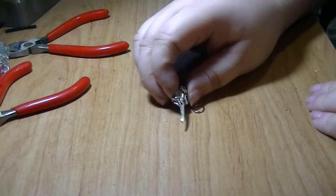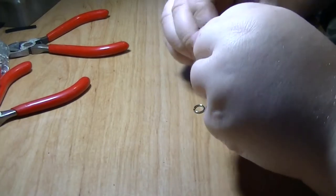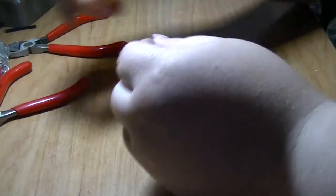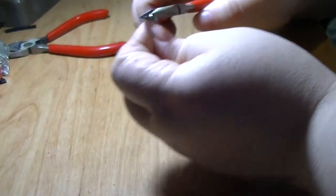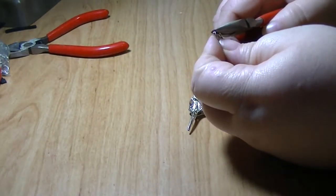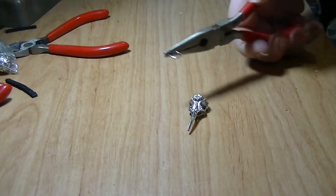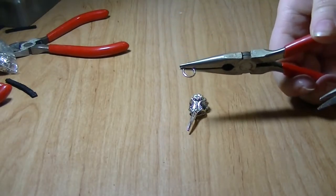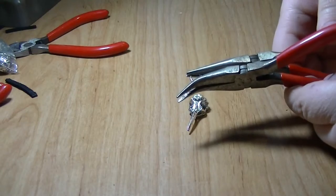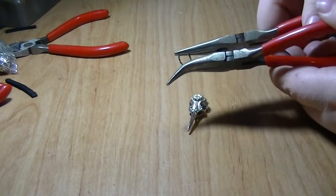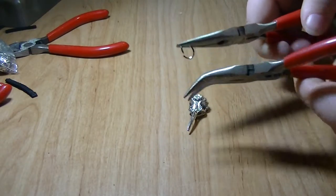Now we're just going to make the charm. In order to open the jump ring, you're going to want to clamp it with two sets of pliers and twist it. Don't pull it open. Twist it. If you pull it, it'll weaken the jump ring. So you're just going to twist it like that.